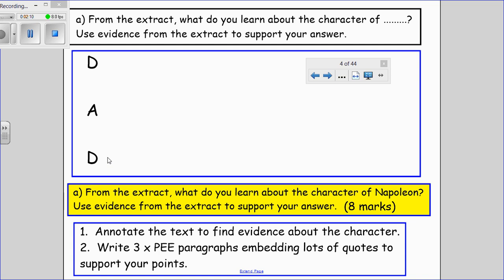If you look at this question here, what do you learn about the character of Napoleon? Go back to the extract on the previous page, annotate the text, and see if you can find evidence about the character. You're looking to make three point-evidence-explain paragraphs where you embed lots of quotes to support your point.